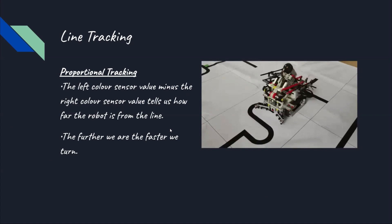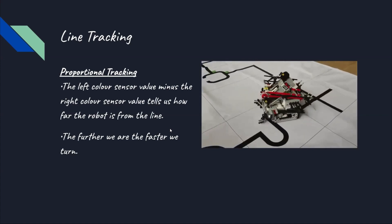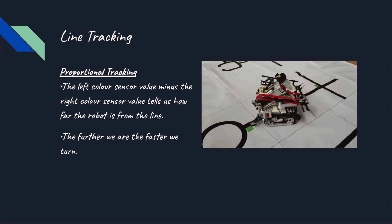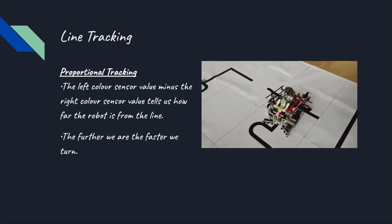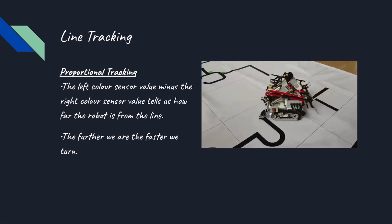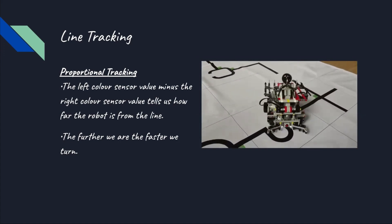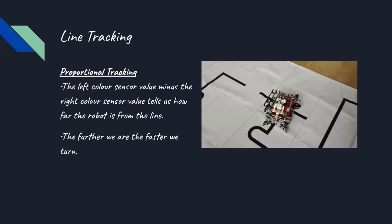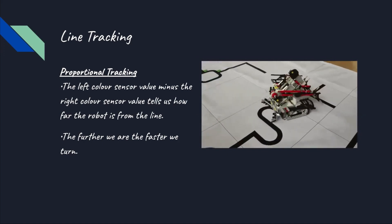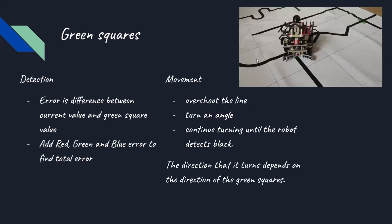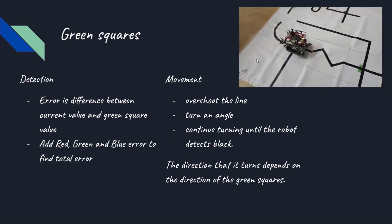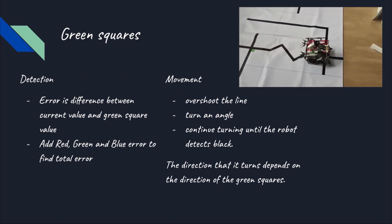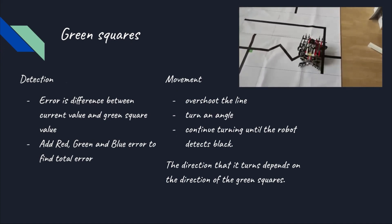Next, we will be talking about the green square. We managed to detect the green square by using error, which is the difference between the current value and the green square value. We added the red, green and blue error to find the total error. Then, we will stop the line and turn on the spot until the robot detects black. The direction that it turns depends on the direction of the green square. It will continue and move until the green square is around the corner.